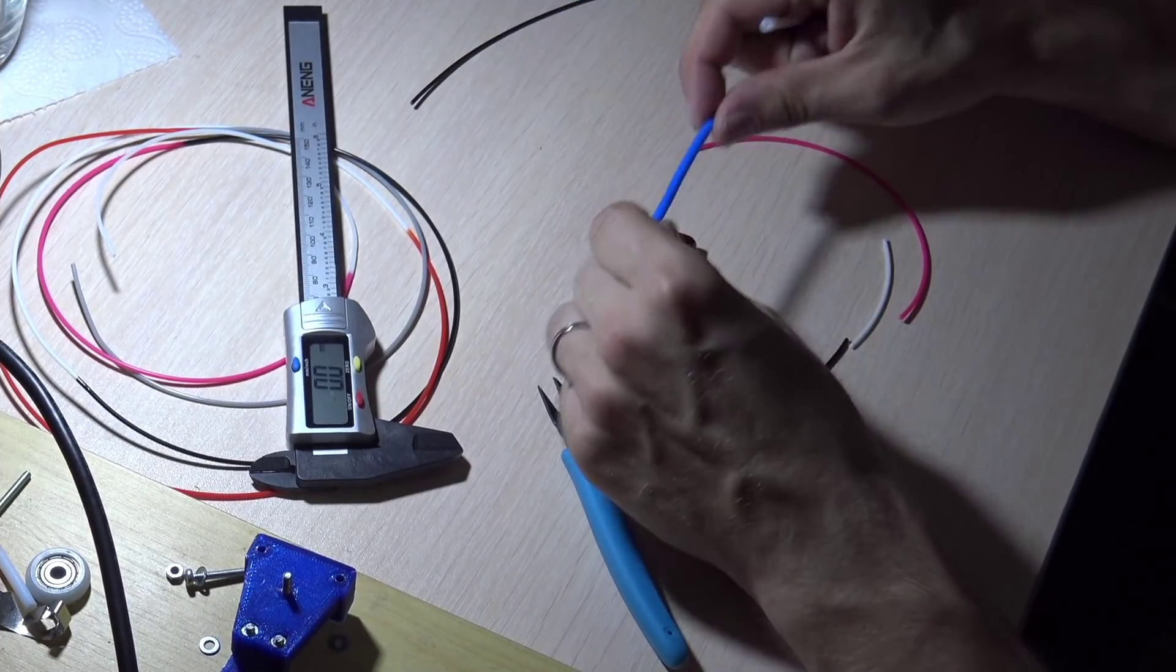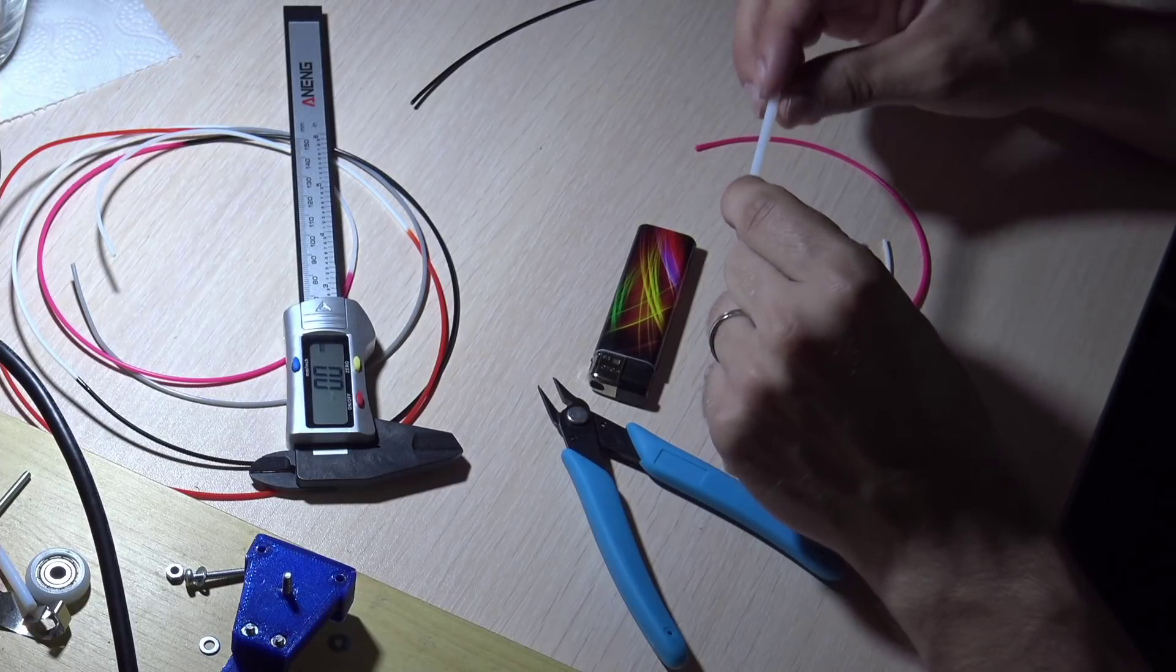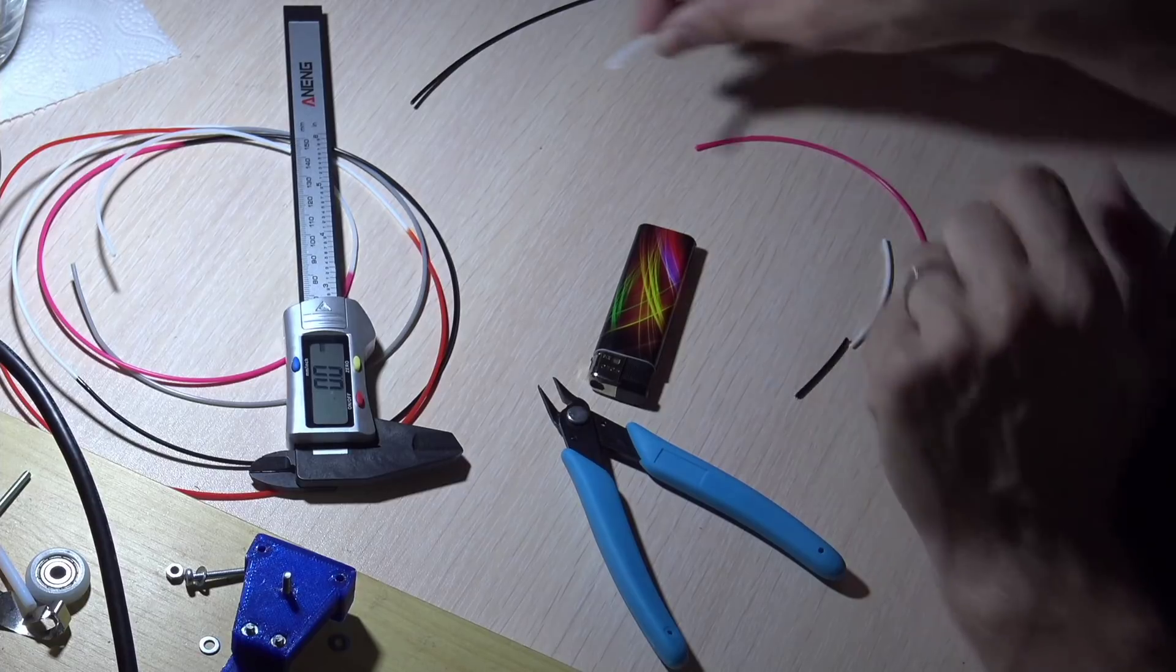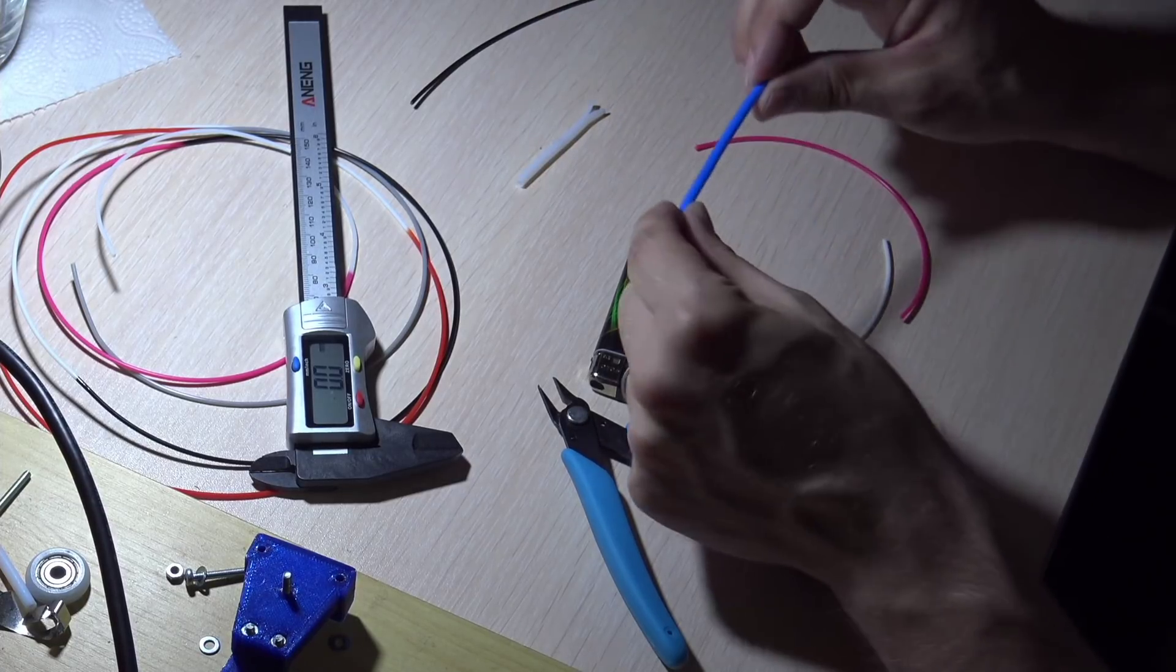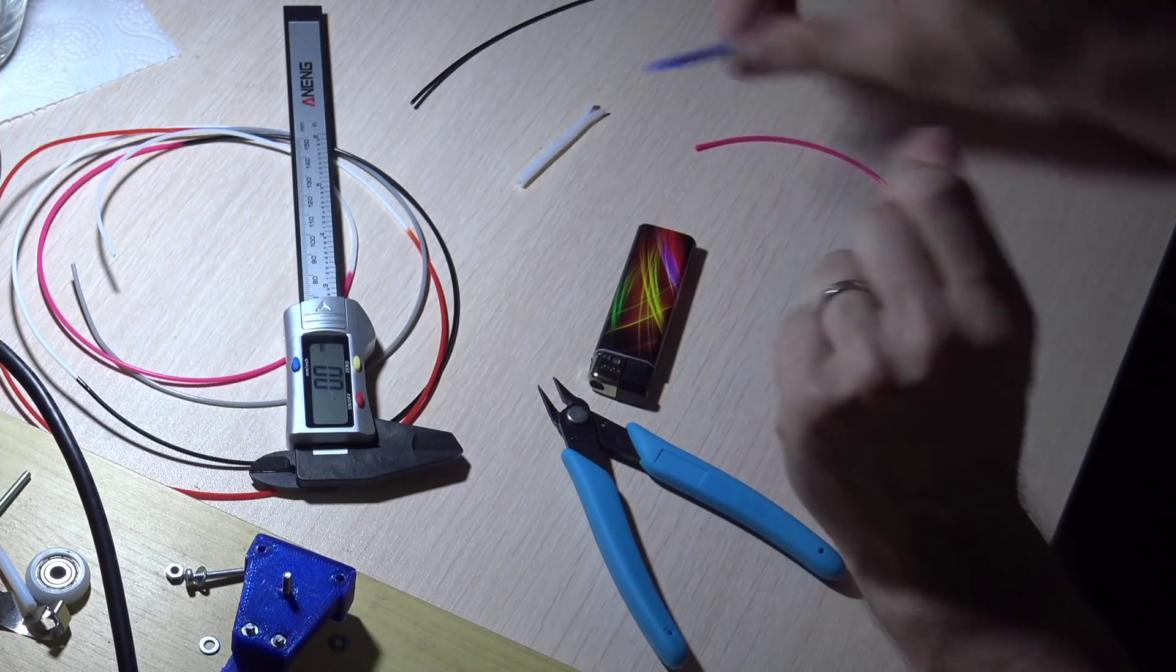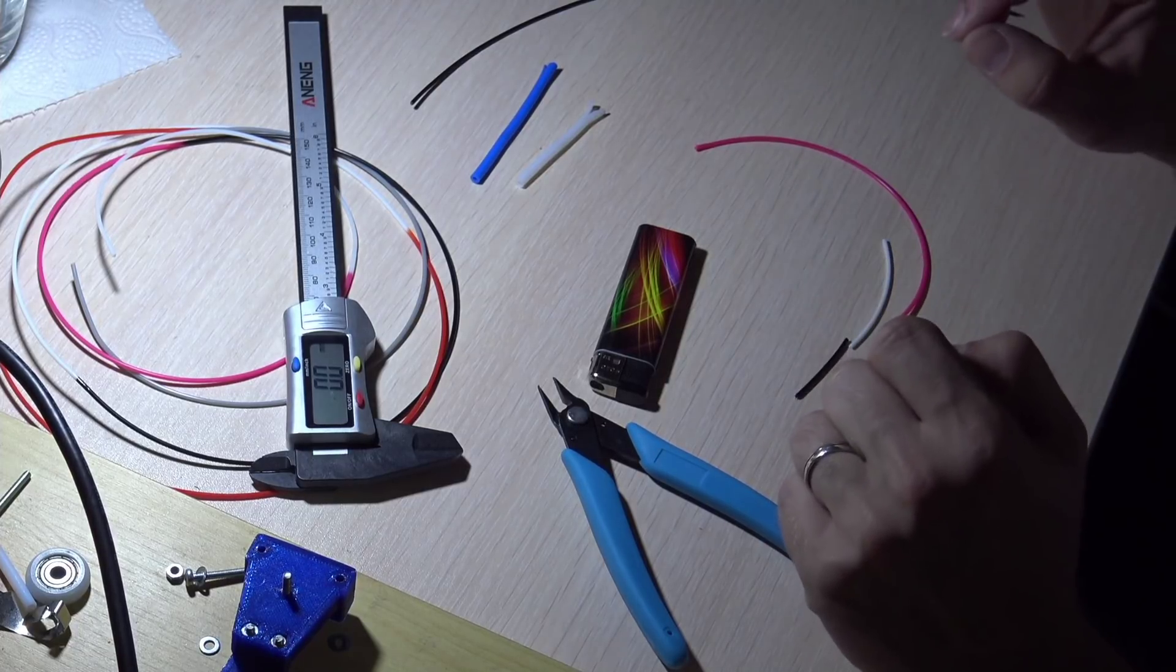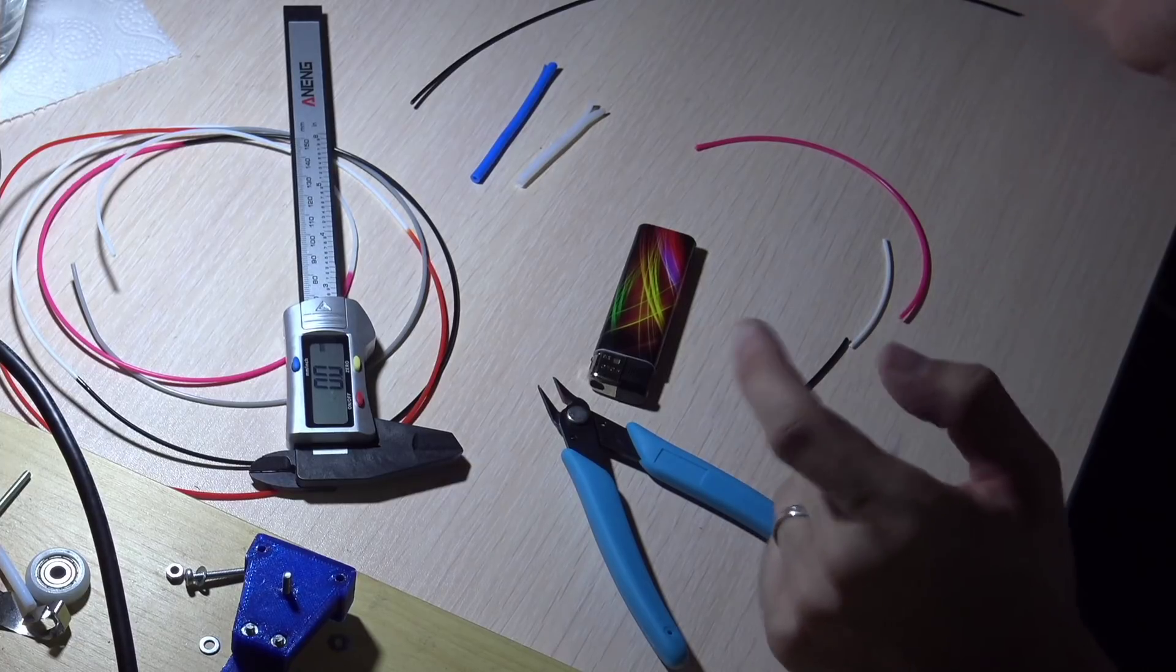On our printers we are usually using this PTFE tube with inner diameter 2.0 mm, or sometimes, when we are really cool, we are using this with 1.9 mm inner diameter. And because the filament is 1.75 mm, we have to use something smaller.